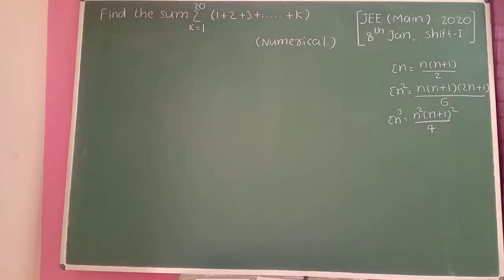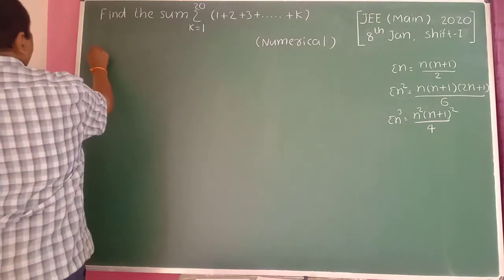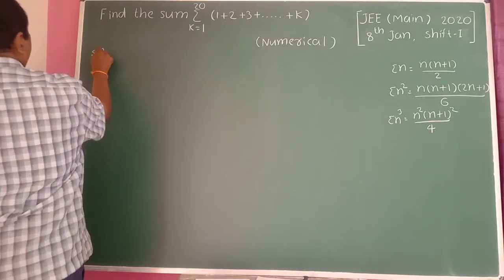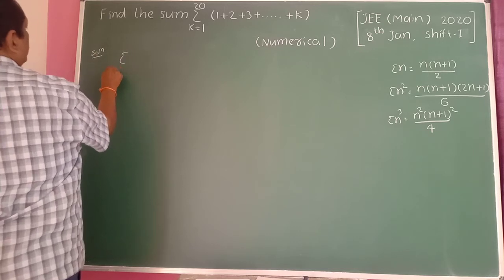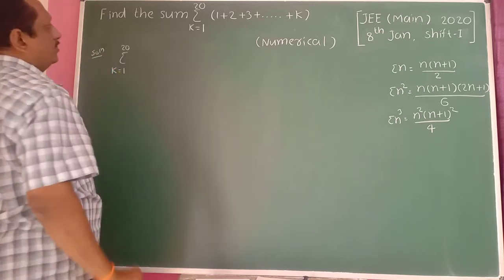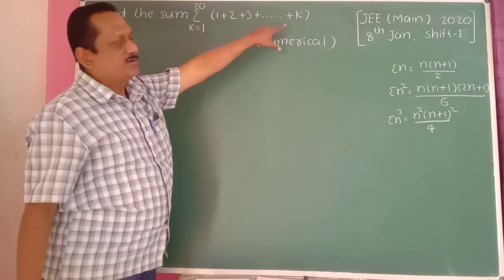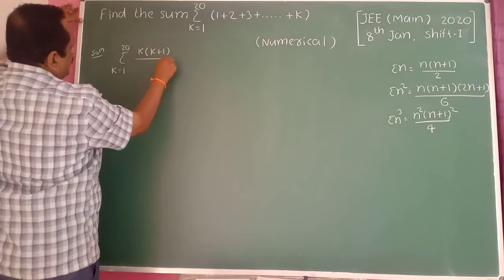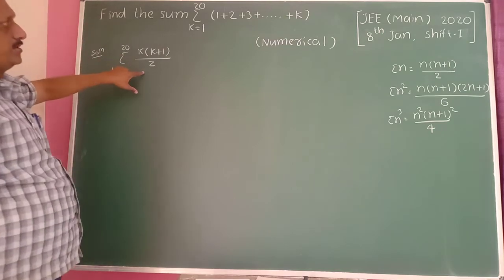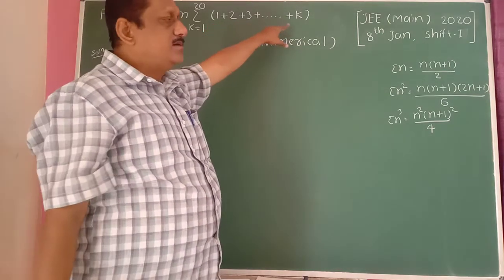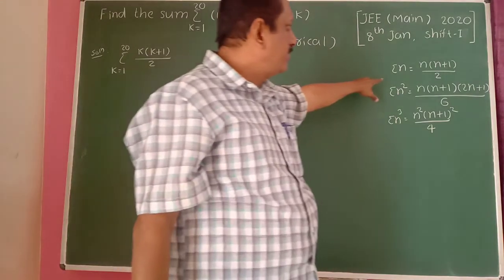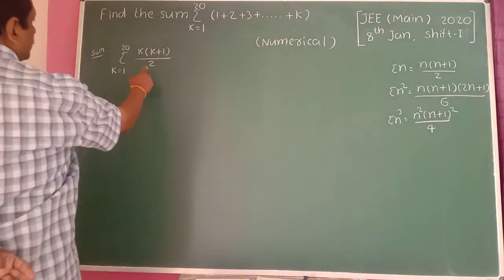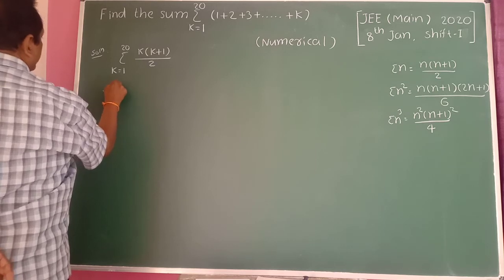Next problem: Find the sum of summation of 1 plus 2 plus 3 up to k, for k equal to 1 to 28. This is also a numerical problem. Here, 1 plus 2 plus 3 up to k is given by k times k plus 1 divided by 2.